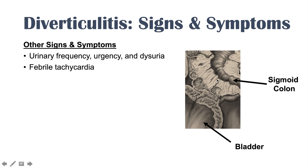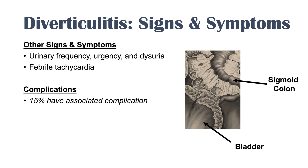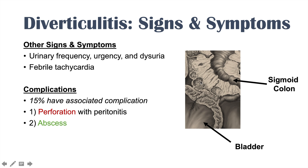Because there might be some microperforation with fecal matter exiting through the diverticulum, patients can become febrile and tachycardic. The complications of diverticulitis occur in approximately 15% of acute diverticulitis patients. These include perforation generally with peritonitis, and abscess forming. The diverticula have a weakened wall — not as strong as the surrounding bowel wall — so they can essentially develop a hole.